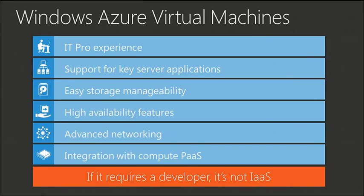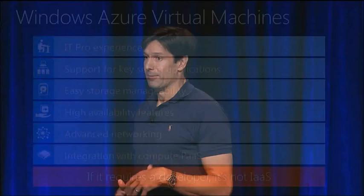We wanted to support key server applications, and we used one particular application to measure our success — SQL Server. We said SQL has got to run really well, so we worked closely with the SQL team to make sure our performance was tier-two, tier-three kind of performance for SQL. That was a key goal. We also addressed other apps, as you saw this morning.